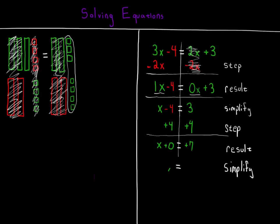Adding 0 changes nothing, so we just write the letter x on the left-hand side of the equation and a 7 on the right. So the answer to our equation ought to be x equals 7.